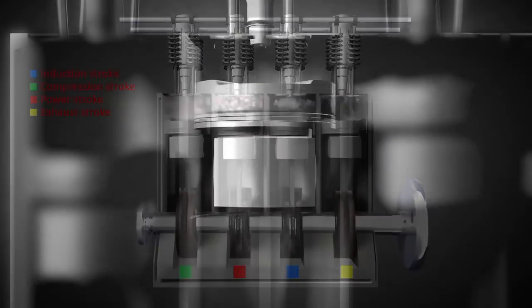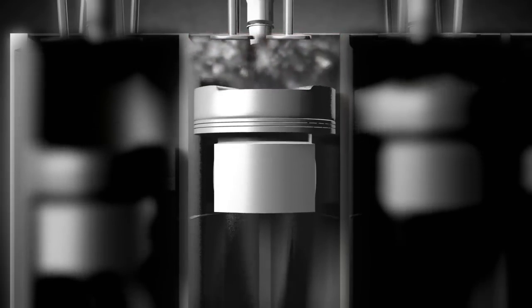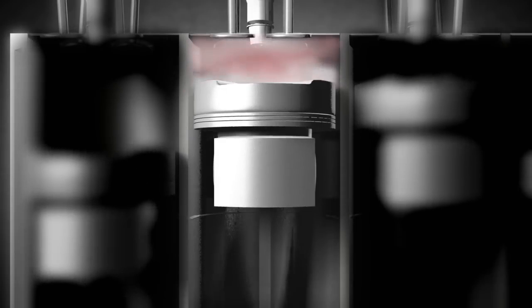Unlike the typical Otto-cycle engine, a diesel engine takes only in air through the intake valves during the first stroke. During the second stroke, the intake valves are closed and the air is compressed.